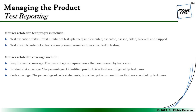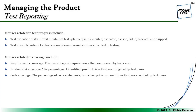For coverage, we measure several varieties: requirement coverage — the percentage of requirements covered by test cases; product risk coverage — measuring all identified product risks and their mitigation by test cases; and code coverage — including statement coverage, branch coverage, path coverage, and condition coverage executed by test cases. These matrices help us understand how well ongoing test activities are measuring coverage parameters.